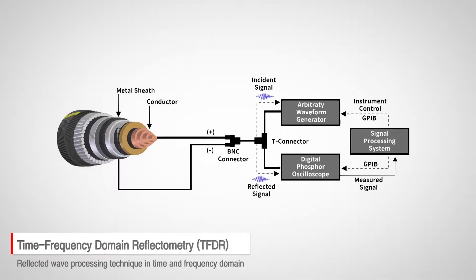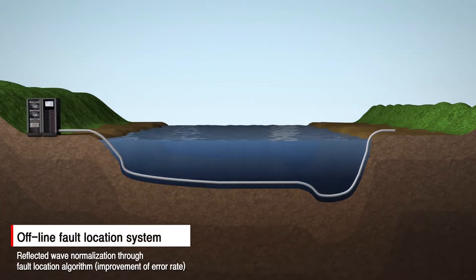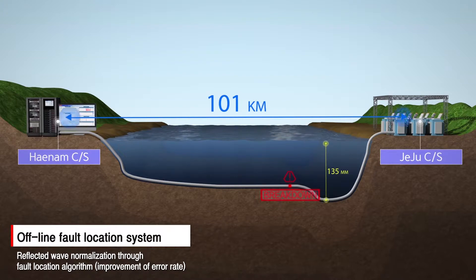Offline fault location technology dramatically improves the error rate of fault location by self-developed algorithm process using time frequency domain reflectometry technique and normalizing the reflected wave.